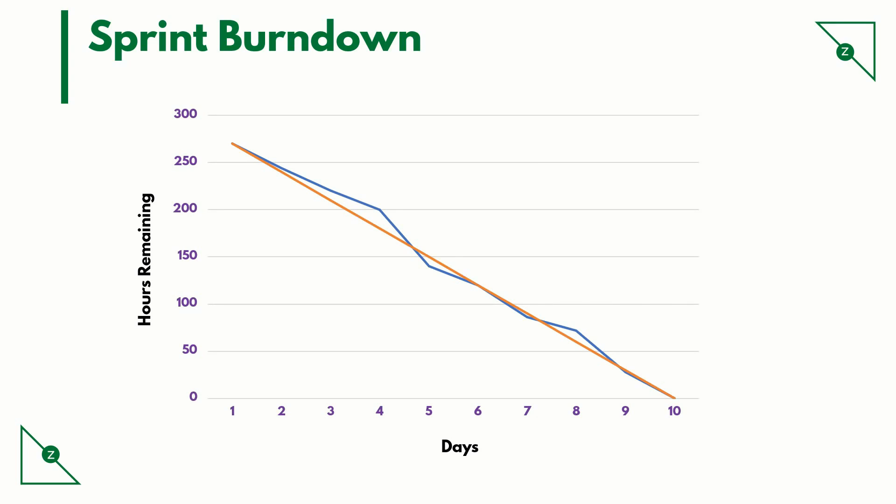The orange line is the ideal curve. The blue line is the actual work being burnt down. You can notice that until day 4, the blue line is above the orange line. This means that the team has not progressed at the ideal pace — they were slightly lagging behind time.